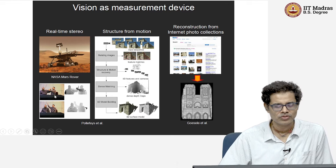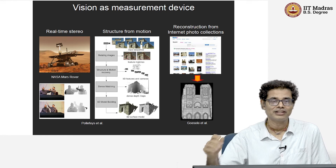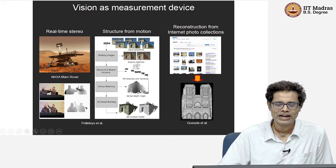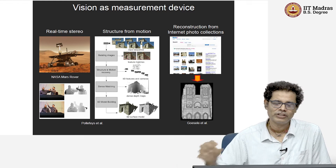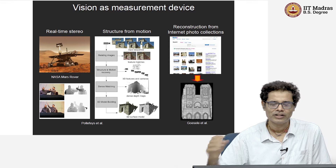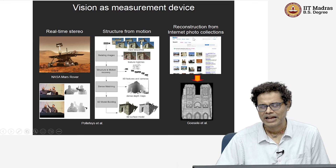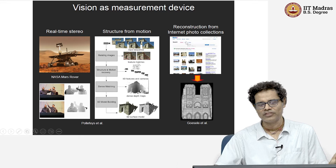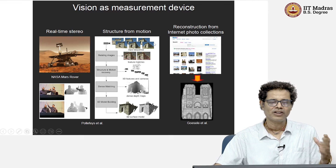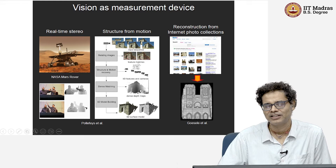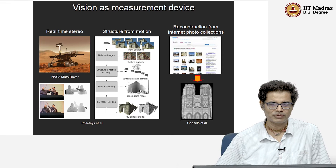There are also ways in which from a single image we can get depth, because even when we close one eye, we can still get some perception of depth using various cues. We can also look at structure from motion, which involves collecting a series of images — multi-view images, or taking a video with one camera and roaming around. From that, we can find the 3D structure as well as the motion of the camera. For example, we can download images of the Taj Mahal and create a 3D model from them. These are all ways of using vision as a measurement device to get depth, point clouds, and camera poses.